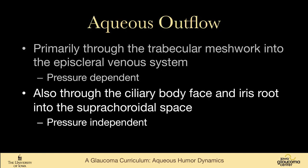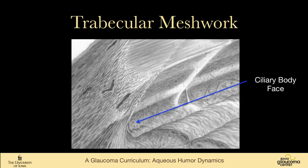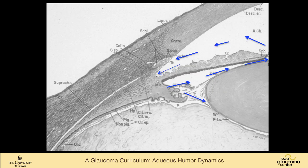The other route of egress is through the ciliary body face and the iris root into the suprachoroidal space, and this is pressure independent. This is a small percentage of aqueous outflow — around 10% — although there are studies that suggest it may be higher than that.